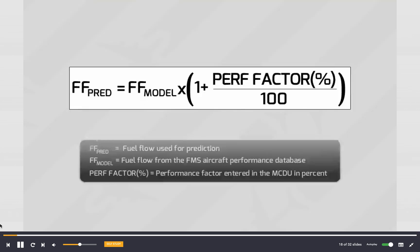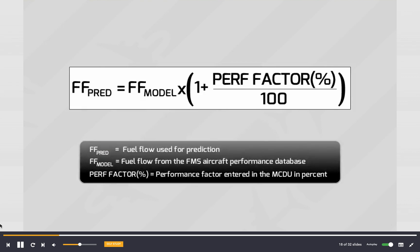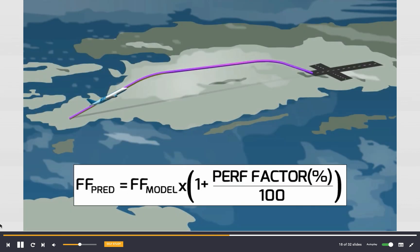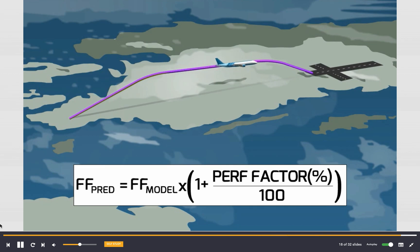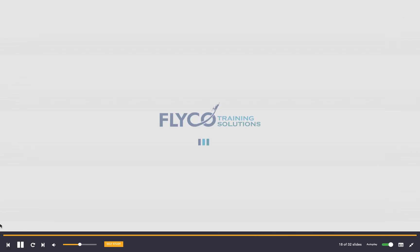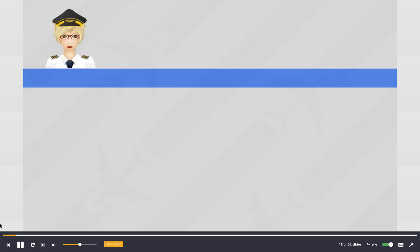The performance factor corrects the predicted fuel flow value according to a defined formula. This correction is applied throughout the entire flight. Question: Which of the following is not affected by the performance factor?